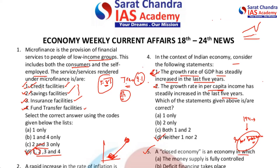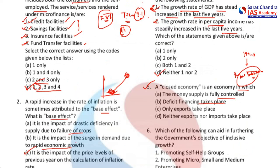A closed economy is an economy in which — the options available are: A, money supply is fully controlled; B, deficit financing takes place; C, only exports take place; D, neither exports nor imports take place. Like we said, there are no exports and no imports, so the answer is D. Closed economy means no one is going to export and no one is going to import.